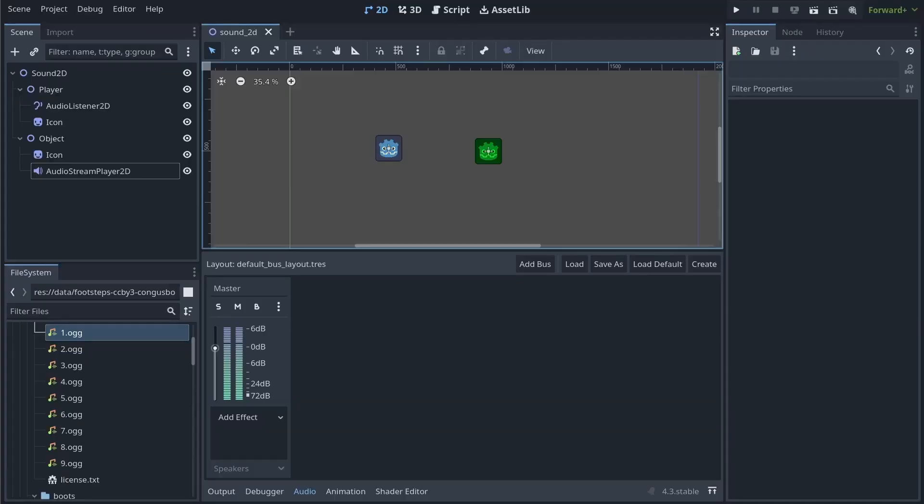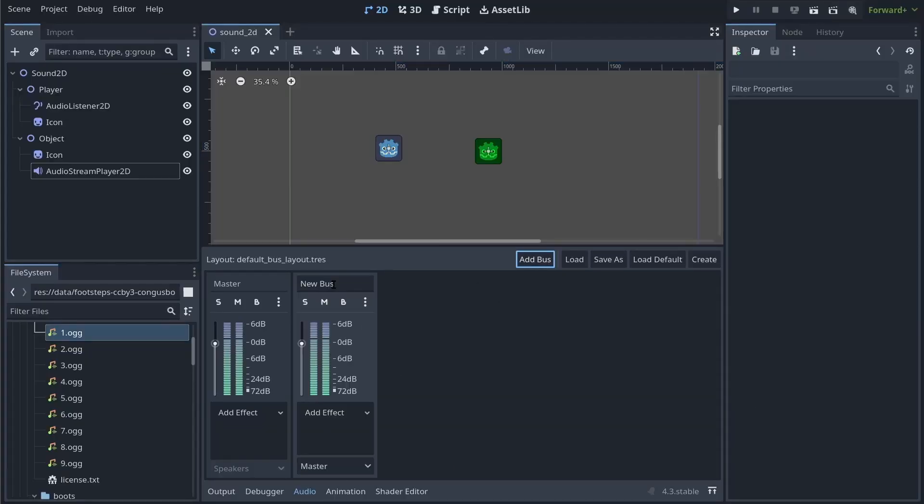So, the first thing at the intermediate level is going to be talking about the audio buses in Godot. So, by default, everything goes into the master audio bus. But, if you're serious about making your game, you'll want at least two more buses. You'll want a music bus and a sound effect bus.